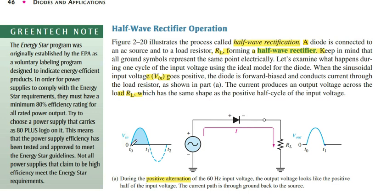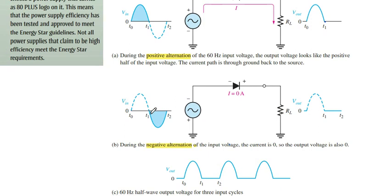During the first cycle from T0 to T1, the diode is positive because the upper side is positive and the lower side is negative, so the diode is forward biased and it conducts the current, and we get output across the RL load resistance. During the negative half cycle, the polarity changes — the positive becomes negative and the negative becomes positive — so the diode does not conduct current.